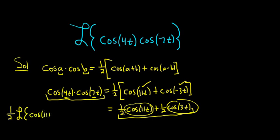So it'll be 1 half Laplace of cosine of 11t plus 1 half Laplace of the cosine of 3t.